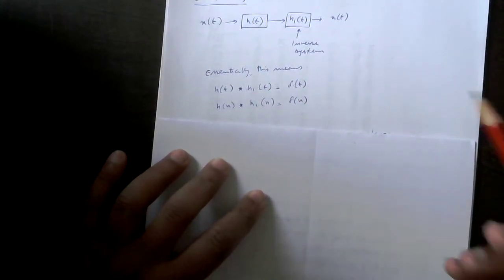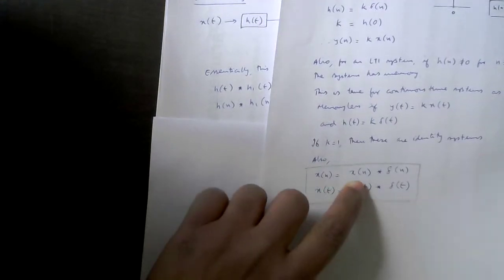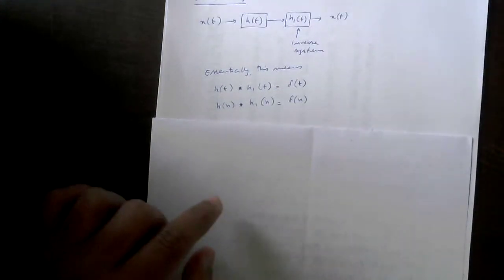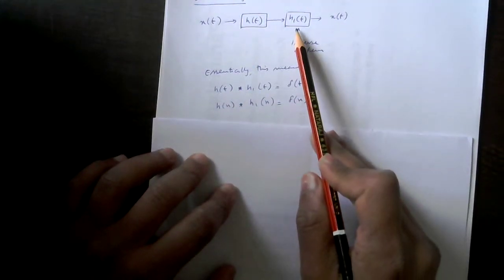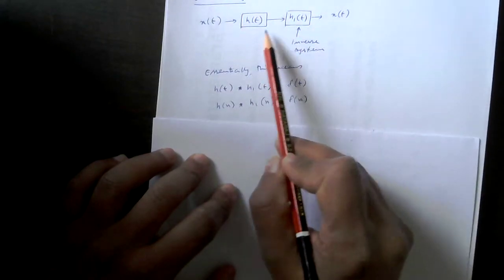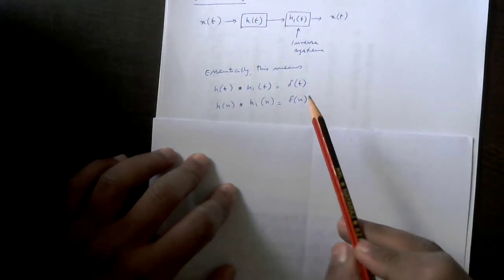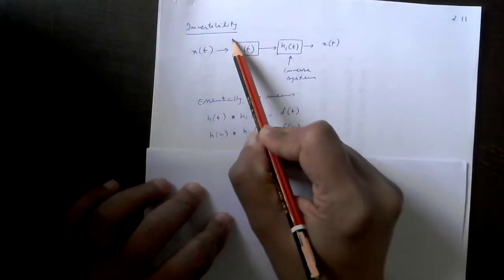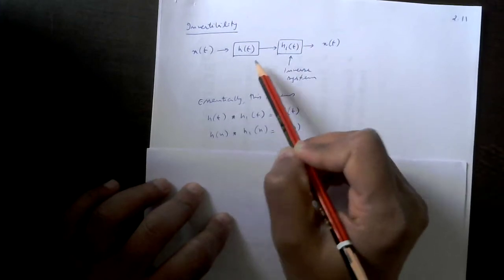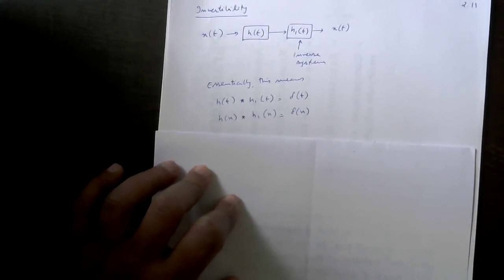Essentially, from the previous property, x(n) = x(n) * δ(n). This means that h(t) convolved with h_inv(t) will give δ(t), because if the combined system equals δ(t), then x(t) * δ(t) will again give x(t). So when you convolve the system with the inverse of the system, if the inverse exists, you will get back a delta function.